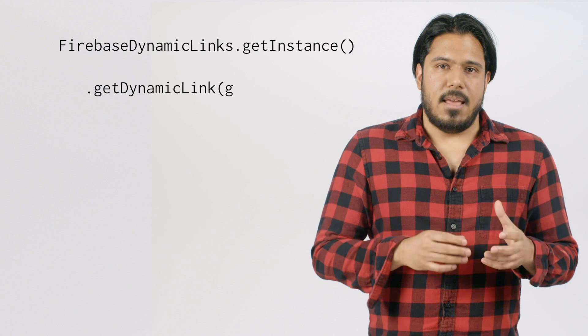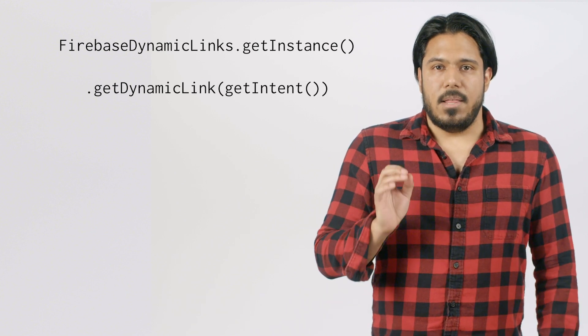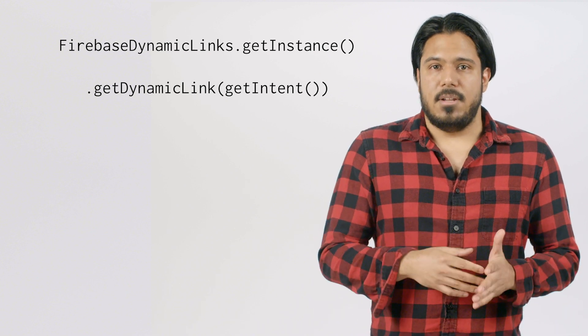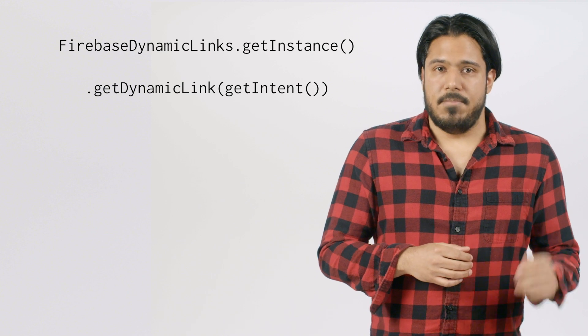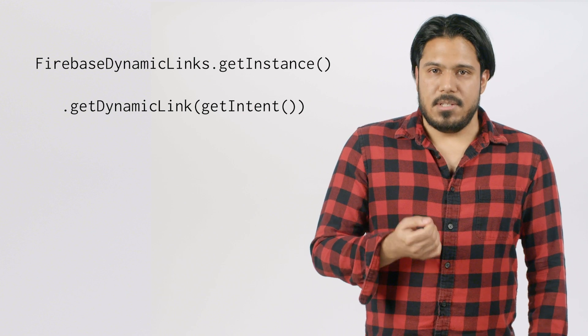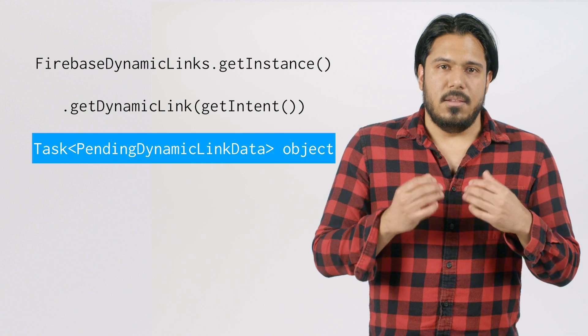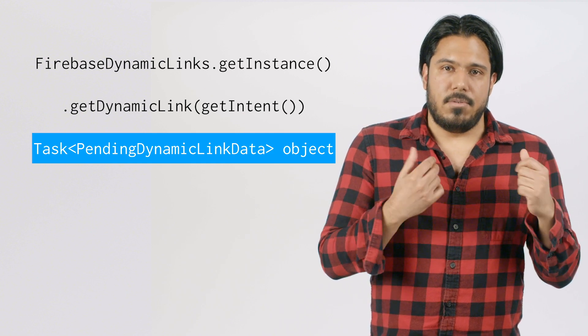Next is the getDynamicLink getIntent call. Now this is an asynchronous call that returns a task object sometime later after fetching the Dynamic Link data from the Firebase Dynamic Link servers. This call is important because it's actually what checks for any pending Dynamic Link data that was captured if we're coming to this activity from a user clicking on a Dynamic Link. And it might also involve doing some extra steps like resolving the Short Link URL to the expanded URL that you'll need to extract your Deep Link data.